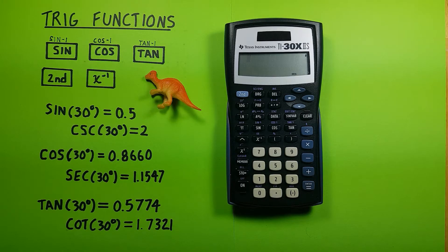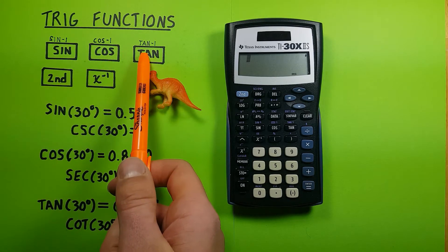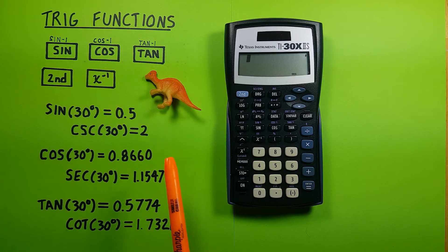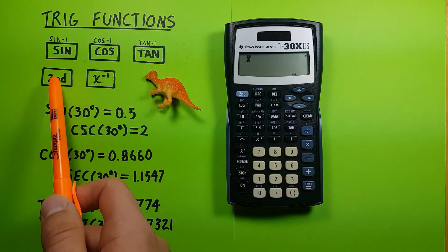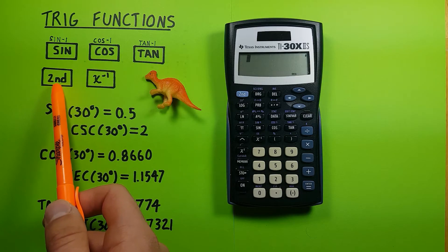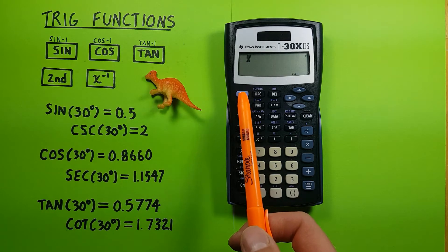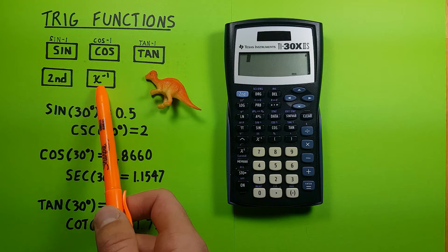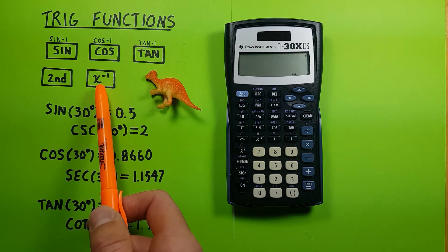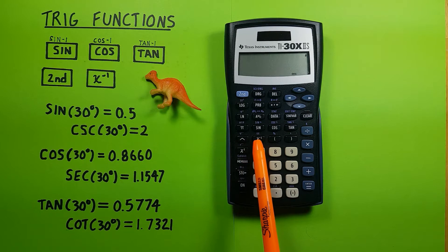To do this, we'll be using the sine, cosine, and tangent keys located along here, as well as the second function key up here, and the x to the power of negative 1 or x inverse key located right here beneath the sine key.